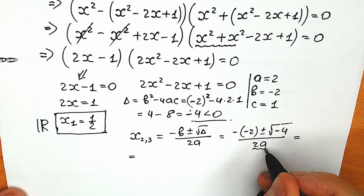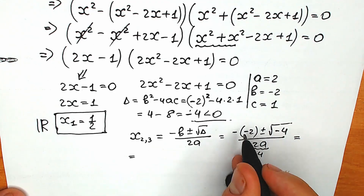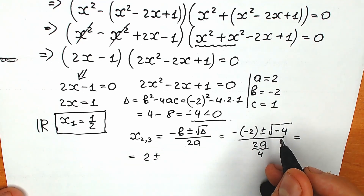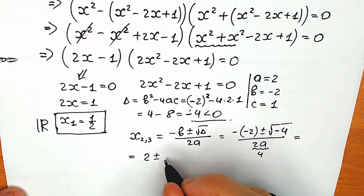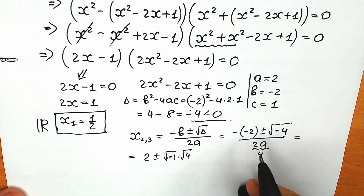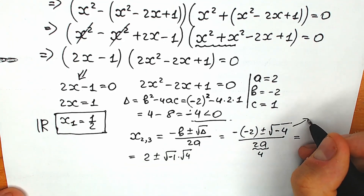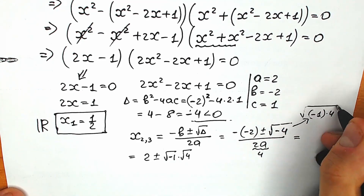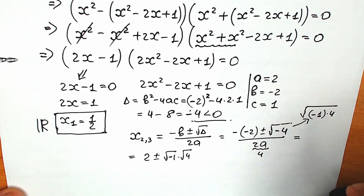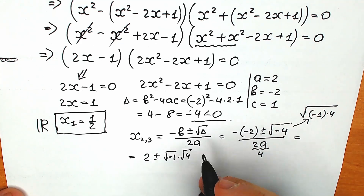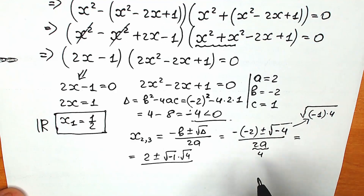We get 2 plus or minus square root of minus 4. I'll rewrite square root of minus 4 as square root of minus 1 times square root of 4. The square root of minus 1 is the imaginary unit i, and the denominator is 4.